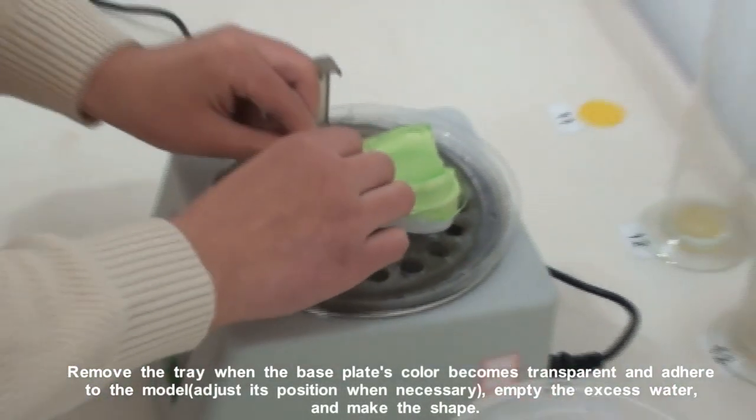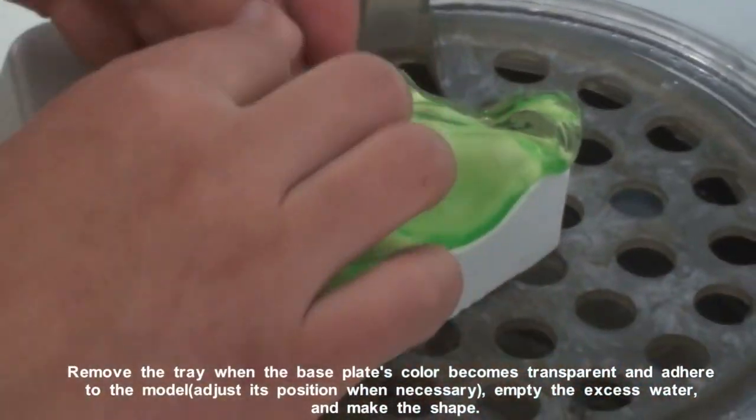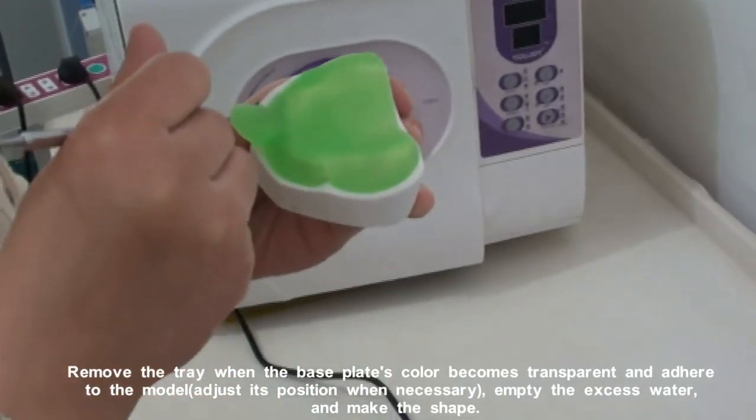Remove the tray when the base plate's color becomes transparent and adheres to the model. Adjust its position when necessary, empty the excess water, and make the shape.